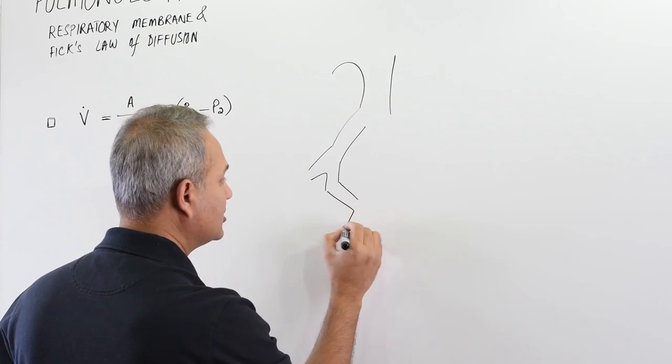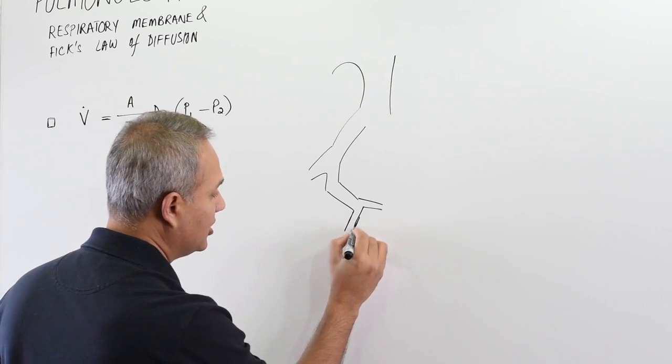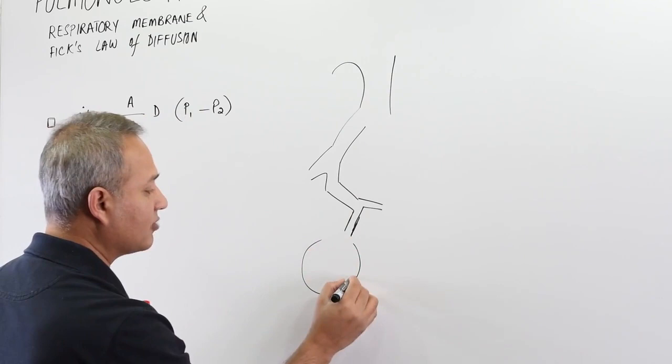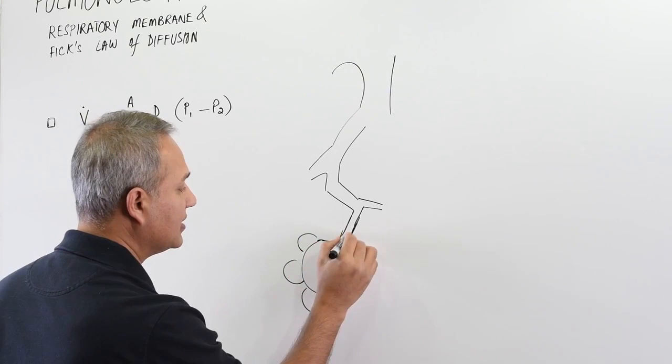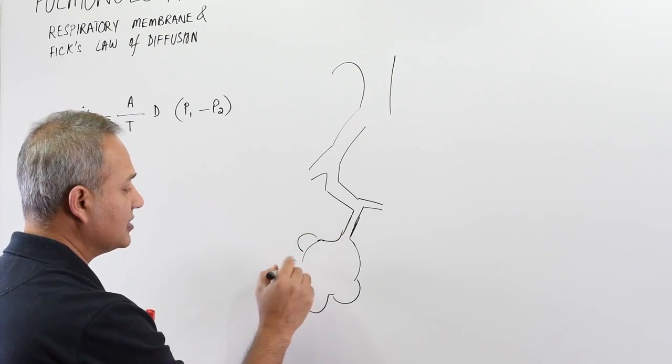So let's say this is a respiratory bronchiole which then opens up in an alveolar sac which has alveoli attached to it. And then there is blood supply in this area and so that is the respiratory zone. We have done that in the histology, I don't want to waste your time here.